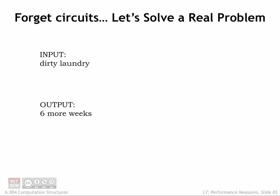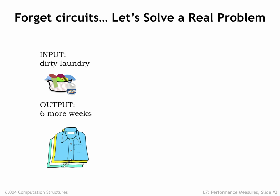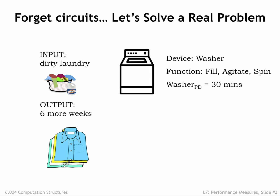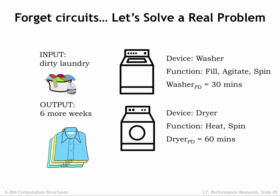Laundry is a processing task we all have to face at some point. The input to our laundry system is some number of loads of dirty laundry, and the output is the same loads but washed, dried, and folded. There are two system components: a washer that washes a load of laundry in 30 minutes and a dryer that dries a load in 60 minutes. You may be used to laundry system components with different propagation delays, but let's go with these delays for our example.